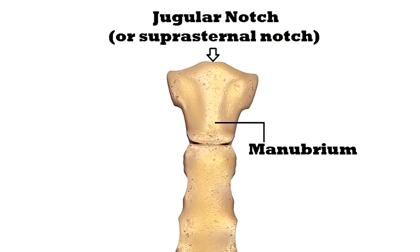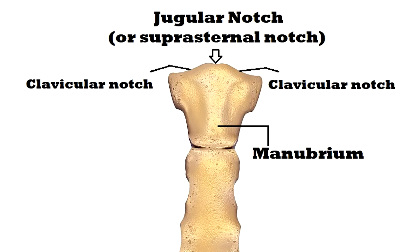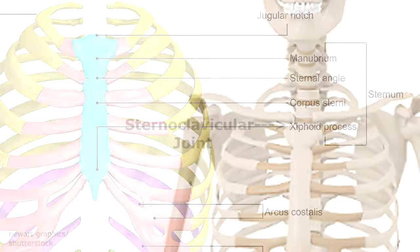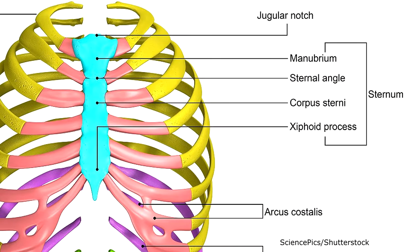On each side of the jugular notch we have the clavicular notches, which articulate with the sternal end of the clavicle bones and that's going to form the sternoclavicular joint. Ribs 1 and 2 are going to articulate with the manubrium, but rib 2 is going to articulate with only a partial facet at the sternal angle, and on the body there's another little partial facet where it will articulate there.